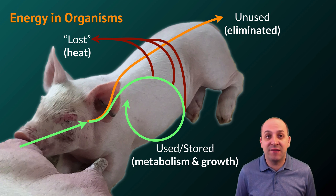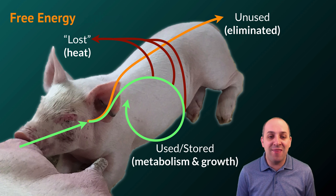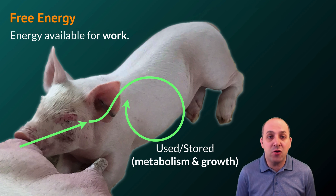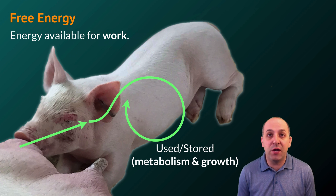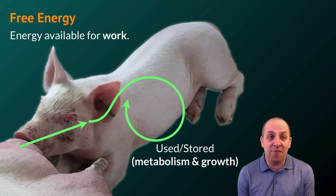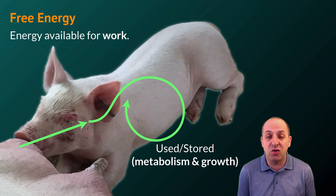It's useful when investigating biological energetics to focus only on the useful energy, and that is the notion of free energy. Free energy in a system is the energy that's available to do work — and work here is used in the physics sense: the ability to exert a force over a distance, to push and pull things around. Everything that living systems do that keeps them alive can be considered some form of work, so it makes sense to focus on free energy when considering biological energetics.